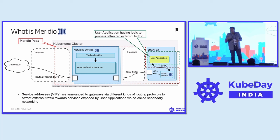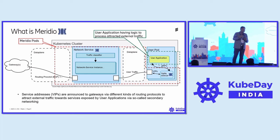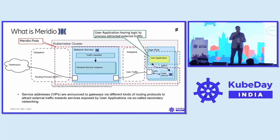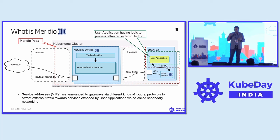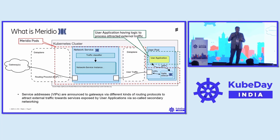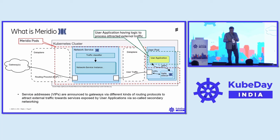Meridio uses the term 'service attractor.' It talks to external gateways using routing protocols like BGP and can announce virtual IP addresses to external gateways. Through this VIP, it attracts external traffic towards your TAPA sidecar container. Traffic comes from the data gateway into a network service pod deployed in your Kubernetes cluster, and then through the TAPA sidecar container. The user application has the logic to process the external traffic, which reaches the container in the user pod through the gRPC API.